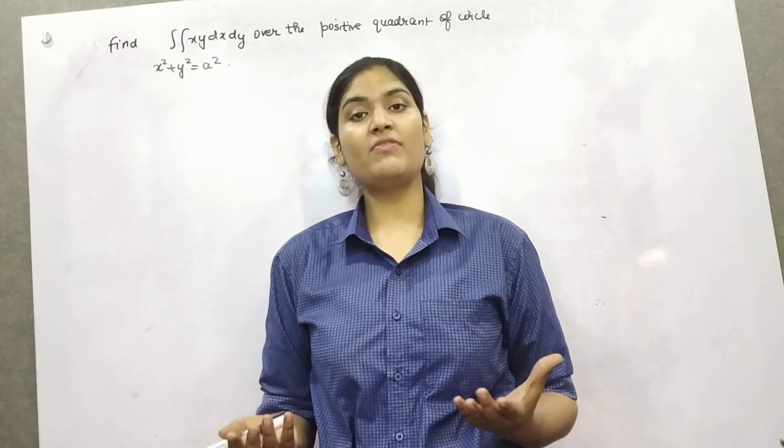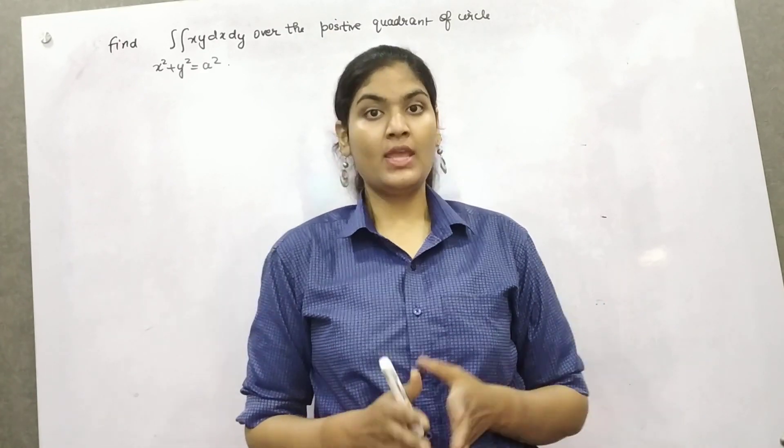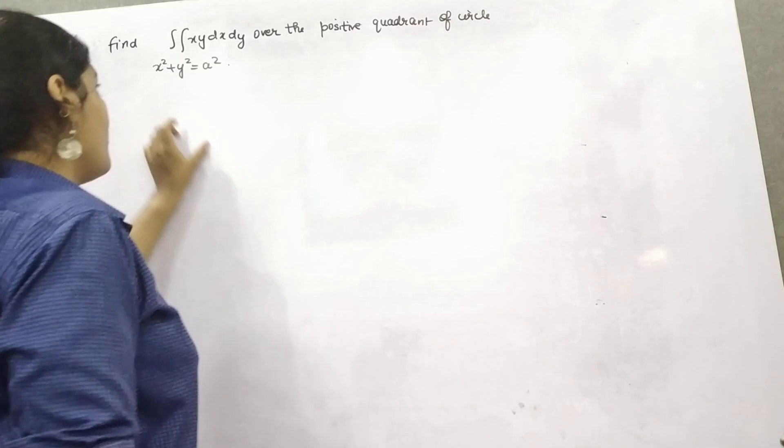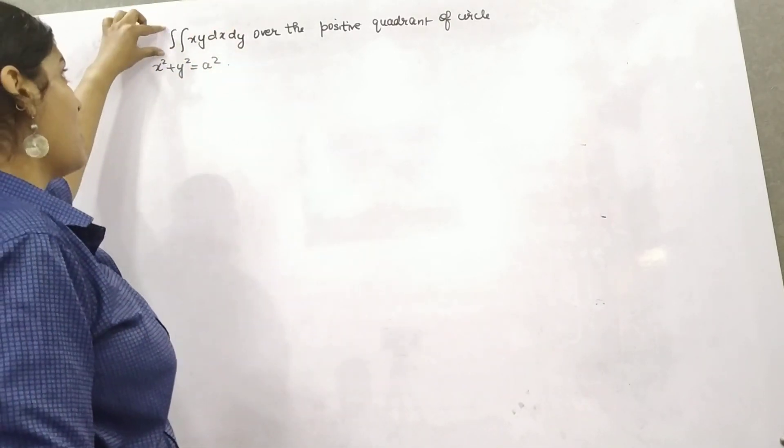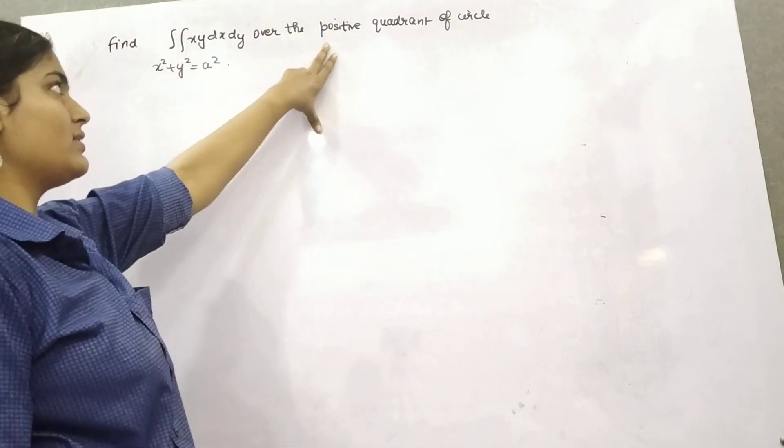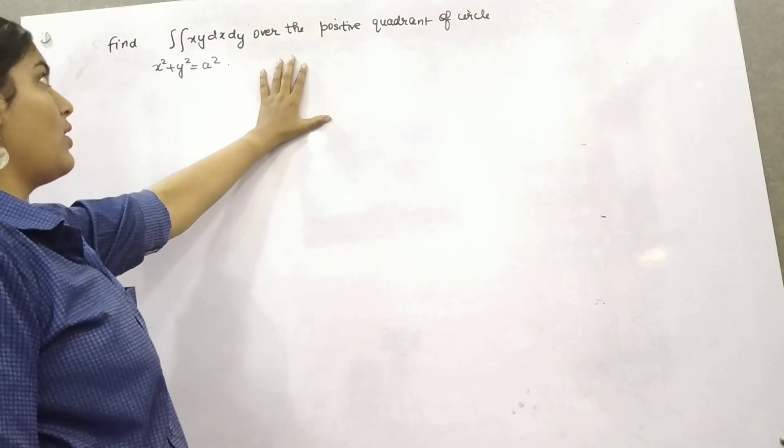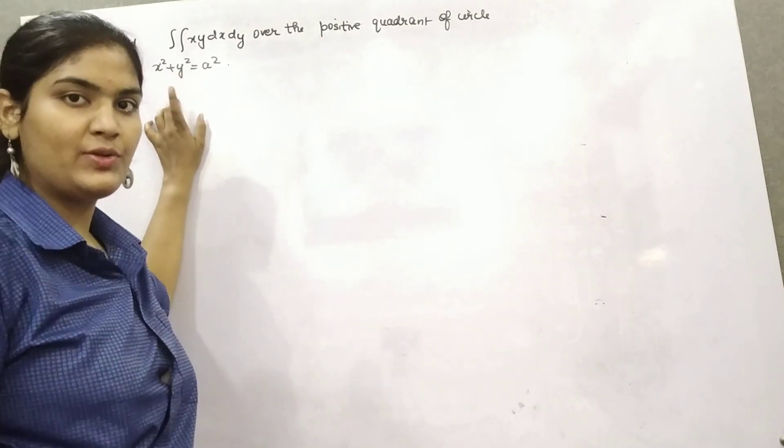But in that, how can we find out the region between, the area of any region? So here is a question where you have to find out the limit for this integration, but limits are not given. However, the hint is given that you have to find out over the positive quadrant of circle, whose equation is this.